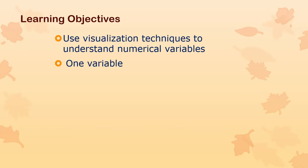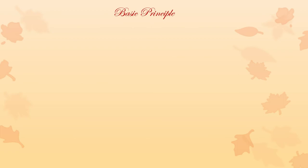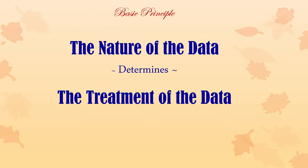So here are the learning objectives, which is basically to understand how to use and read stem and leaf plots and histograms. There's also this basic principle that we should remember: the way you treat the data depends on what the data is.